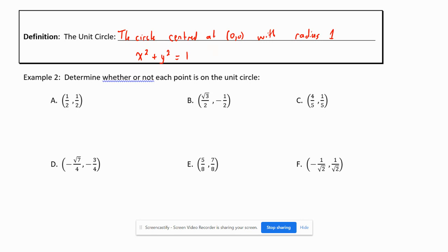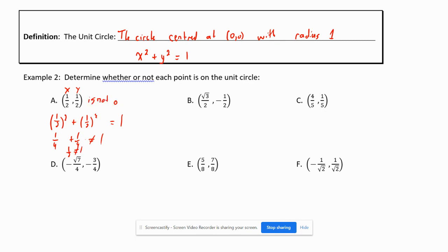Example two says: determine whether or not each point is on the unit circle. The idea is that if I plug the point into x² + y² = 1, I can check. For point (1/2, 1/2): (1/2)² + (1/2)² = 1/4 + 1/4 = 1/2, which does not equal 1, so this point is not on the unit circle.